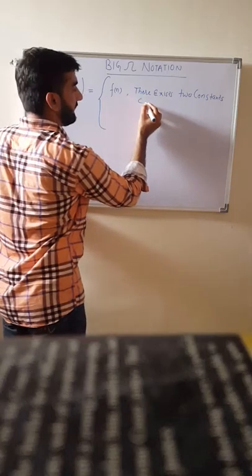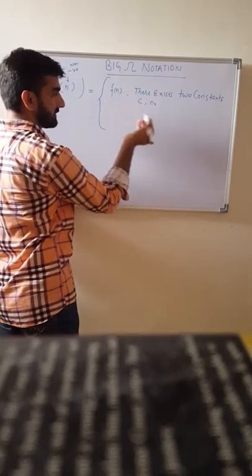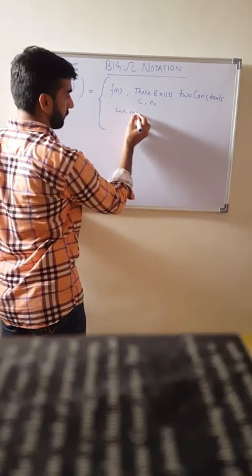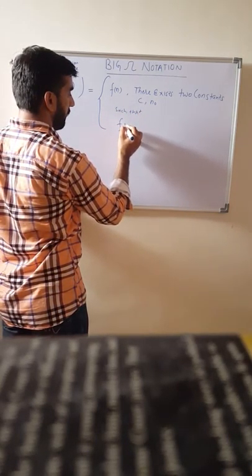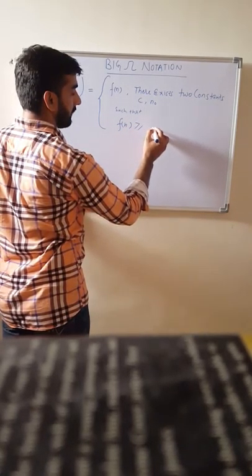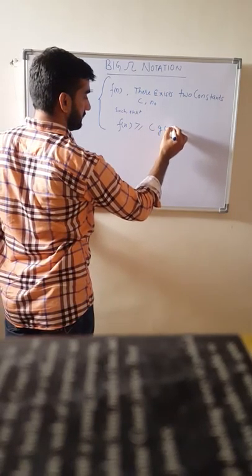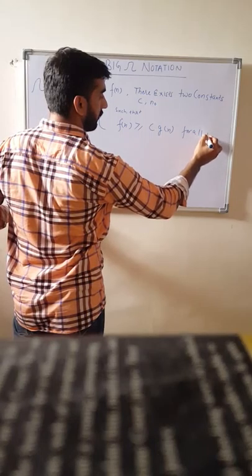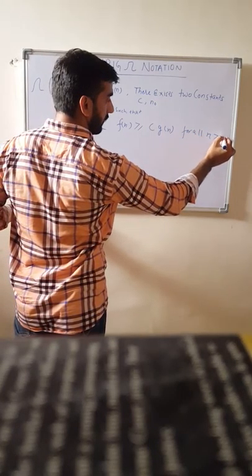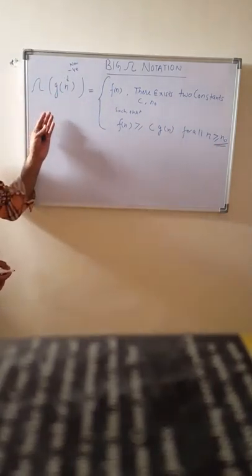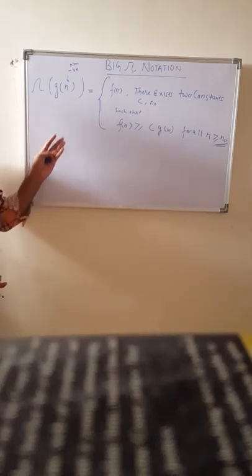C and n₀, such that F(n) is always greater than or equal to C·G(n) for all values of n greater than or equal to n₀. This is the definition of Big Omega notation.